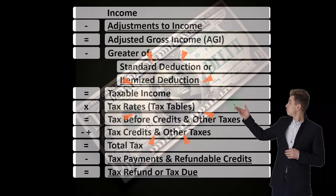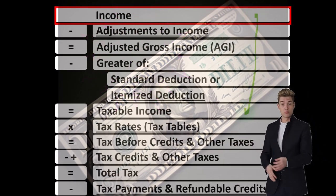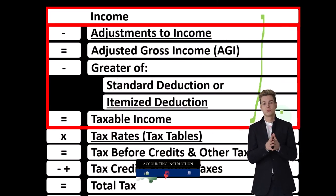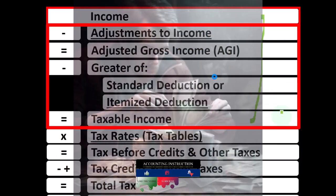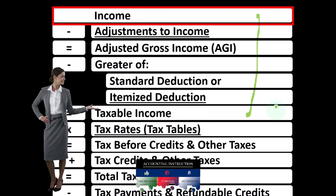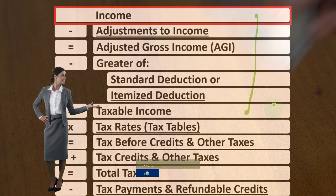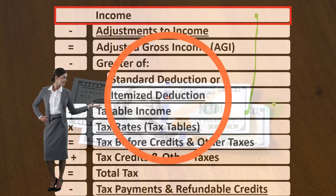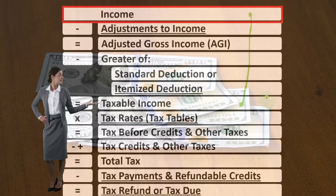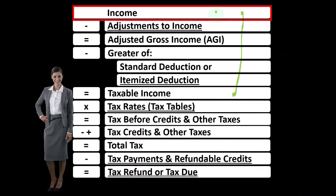Looking at the income tax formula, we're focused on line one income. Remember the first half of the income tax formula is in essence an income statement — just an outline, a scaffolding — with other forms and schedules flowing into these line items, one of those being the Schedule C, which is in essence an income statement in and of itself, having income minus expenses or business deductions to get to net income, which rolls into line one income of the income tax formula.